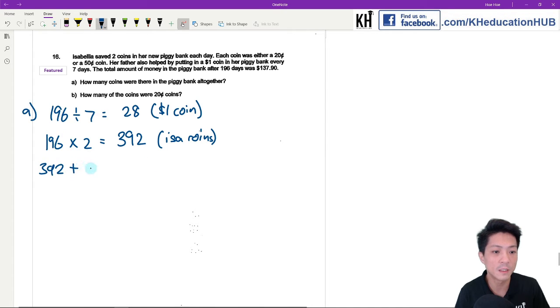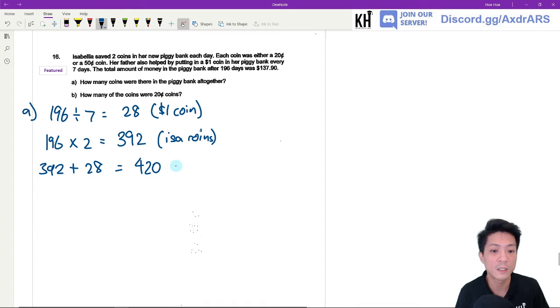So to find the total, I will just need to add them together. Okay, that's a total of 420 coins. This is the answer for part A.